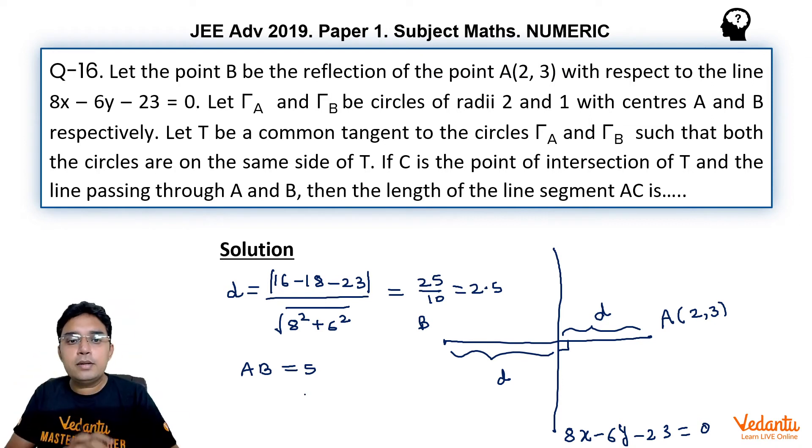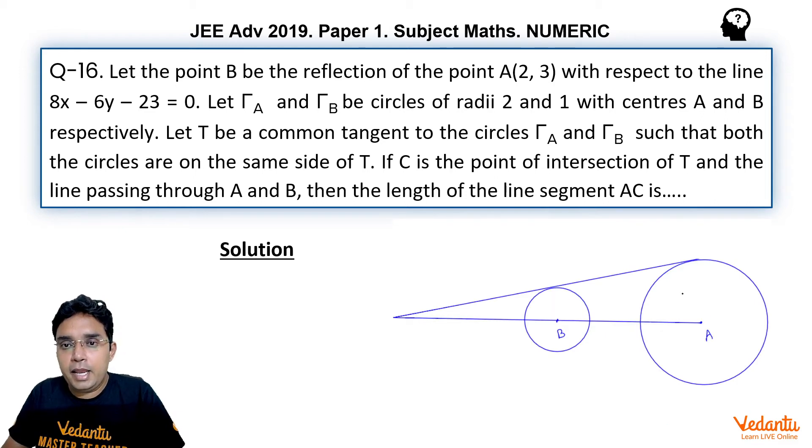So that is one part. Now another part is that we are drawing two circles of radius 2 and 1 with centers at A and B. So these are two circles you can see and T is a common tangent to the circles tau A and tau B such that both circles are on the same side of this T and C is the point of intersection of this T and line passing through A and B. So this is my C here and they are asking what would be AC.